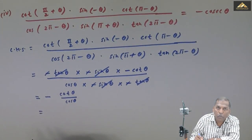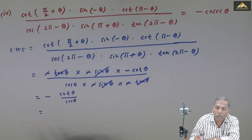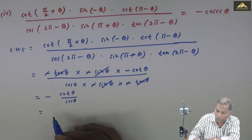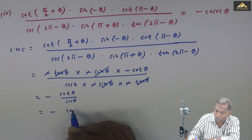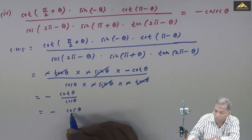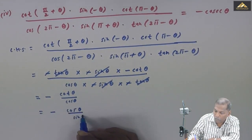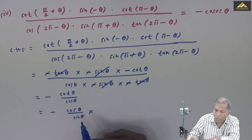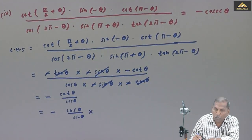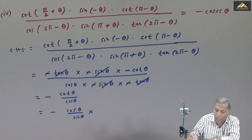So it is equal to minus, and cot can be written as cos theta upon sin theta, and then one upon cos theta as it is.